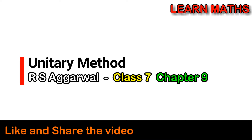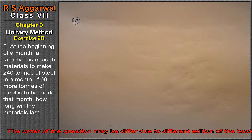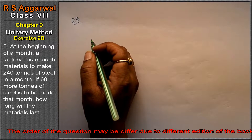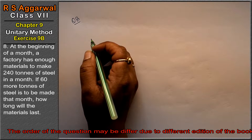Let's do question number 8 of Exercise 9B, that is unitary method. Question number 8 is: at the beginning of a month, a factory has enough material to make 240 tons of steel in a month. If 60 more tons of steel is to be made that month, how long will the material last?